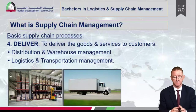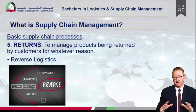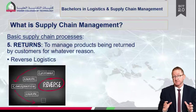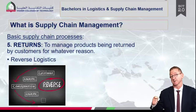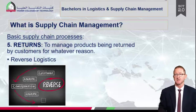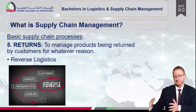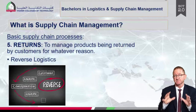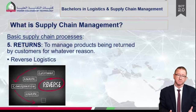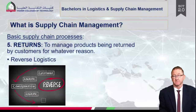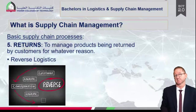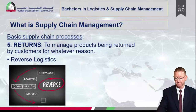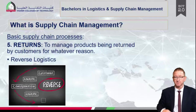The last process is returns. No company plans to manufacture a product that will fail, but mistakes do creep in — think of the Samsung issue where phones were exploding while charging. Firms must be ready to manage what we call the reverse logistics process, where the product is returned from the customer back upstream through the supply chain to the manufacturer.